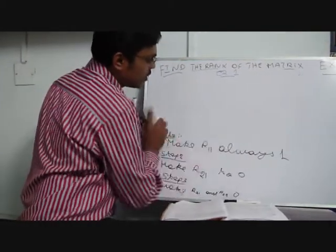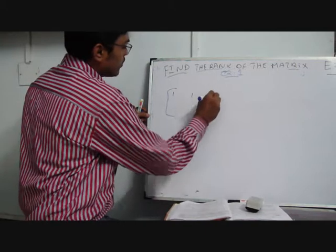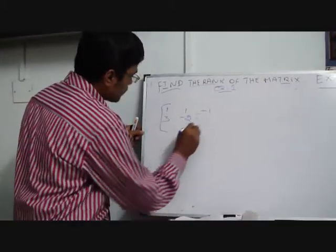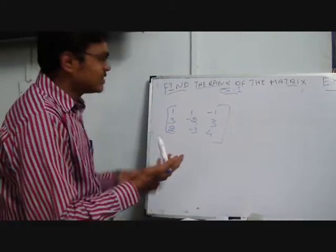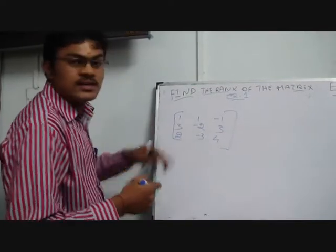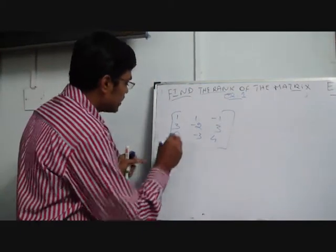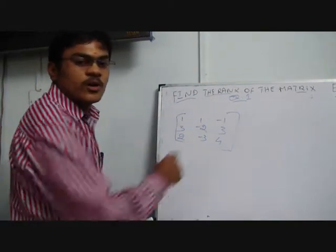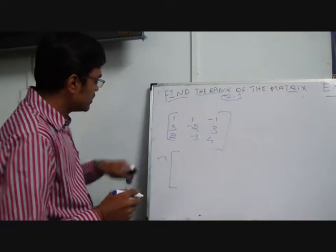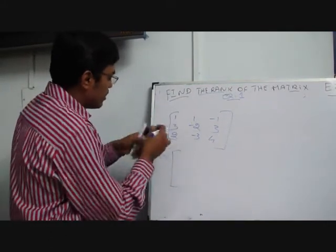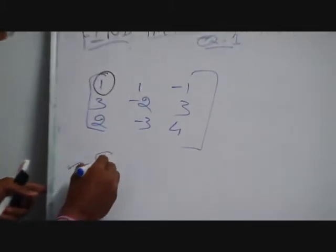Now we take the first sum from exercise 3.1.3. The matrix given is: [1, 1, -1; 3, -2, 3; 2, -3, 4]. Don't be afraid — this is a small sum. The first step is to make r11 equal to 1. Already r11 is 1, so no need to change the first row. We introduce an equivalent symbol and write the same first row.